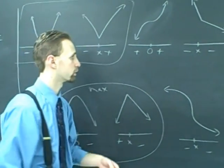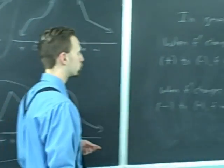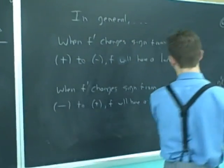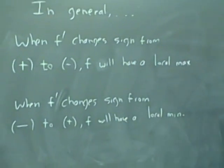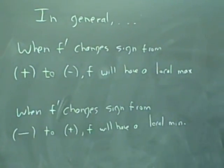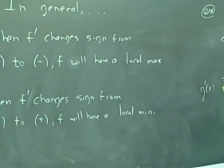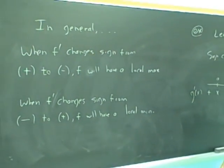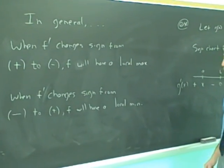That's what is known as the first derivative test. Generally speaking, when a function's derivative changes sign from positive to negative, then the original function will have a local max. And when the function's derivative changes sign from negative to positive, the function will have a local minimum.